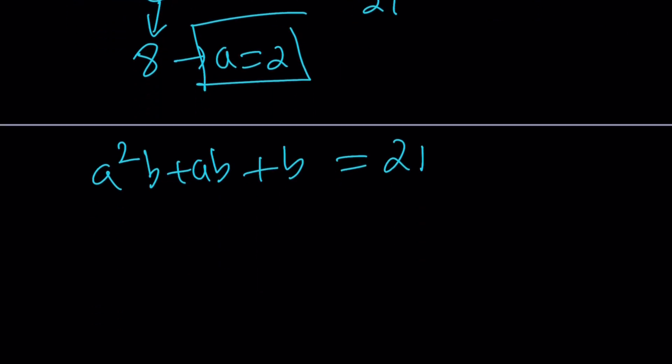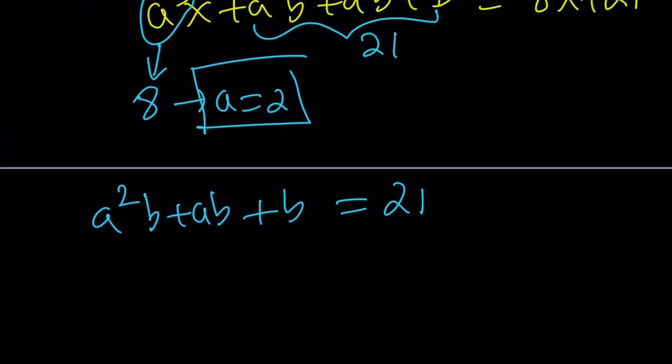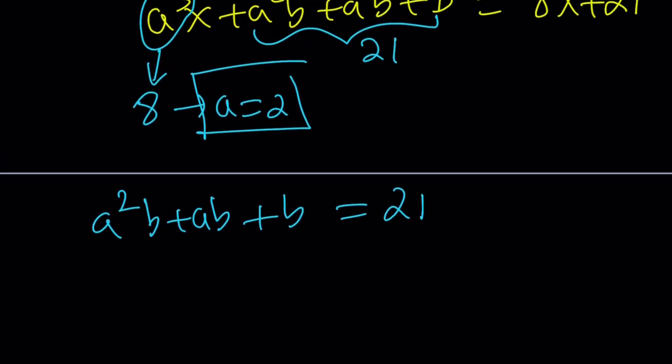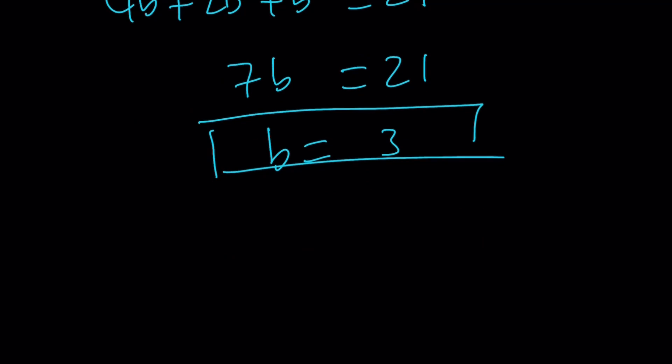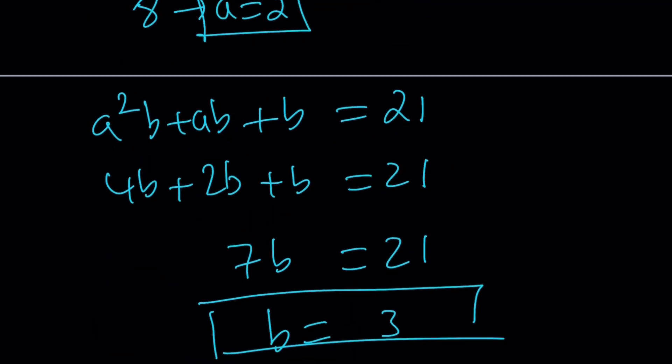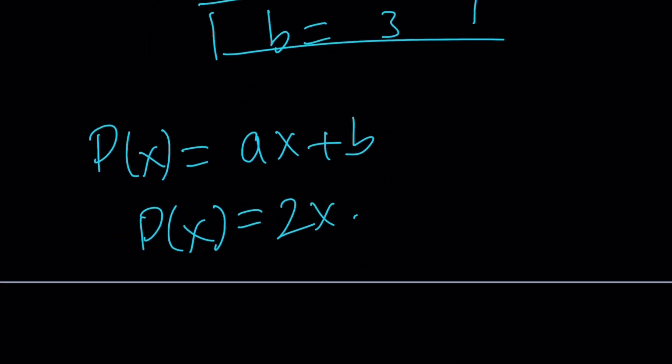And then what I can do is I can set the constant equal to 21, which is a squared b plus ab plus b equals 21. But now I know that a is equal to 2. Therefore, I can just plug it in here, which is going to make it a lot easier. If a is 2, this is 4b, and if a is 2, this is 2b plus b equals 21. And from here, I get 7b equals 21, which means b is equal to 3. So there's only one solution. And we were looking for p of x. And p of x was written as ax plus b, remember? So the solution to this equation is 2x plus 3.